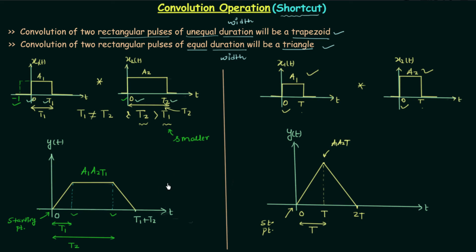In Case 1 we have t1 and t2, but in Case 2 we have only t, so the smaller and larger durations are the same. That is all for this shortcut method. We will solve some questions based on it in the coming presentations. If you have any doubt, you may ask in the comment section. See you in the next one.